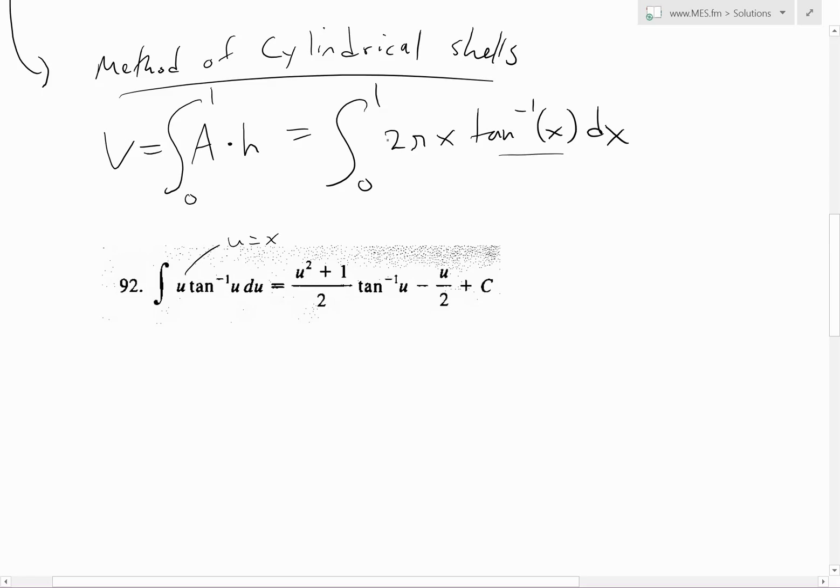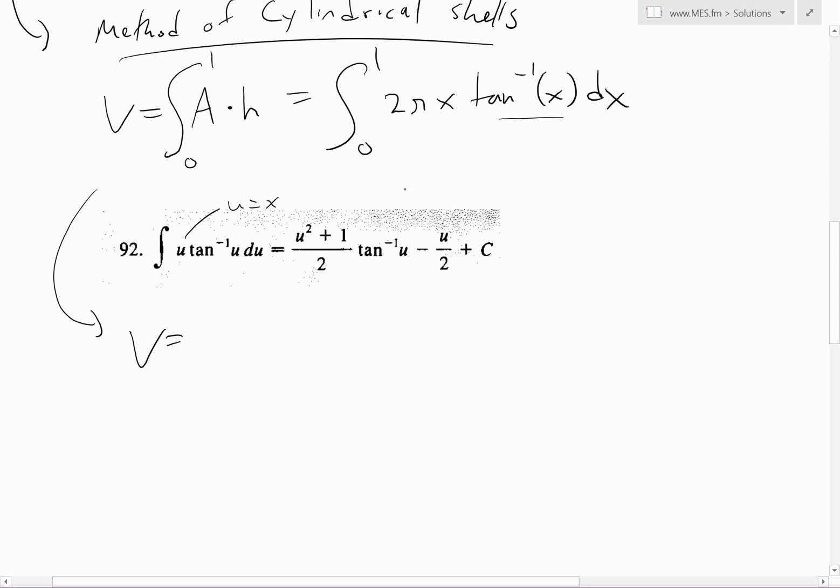Our u is equal to x, and this is the inverse tan of u right here. We can take the 2π out. Then this equals 2π times the integral from 0 to 1 of x tan⁻¹(x) dx, which equals 2π times [(x² + 1)/2 × tan⁻¹(x) - x/2] from 0 to 1.